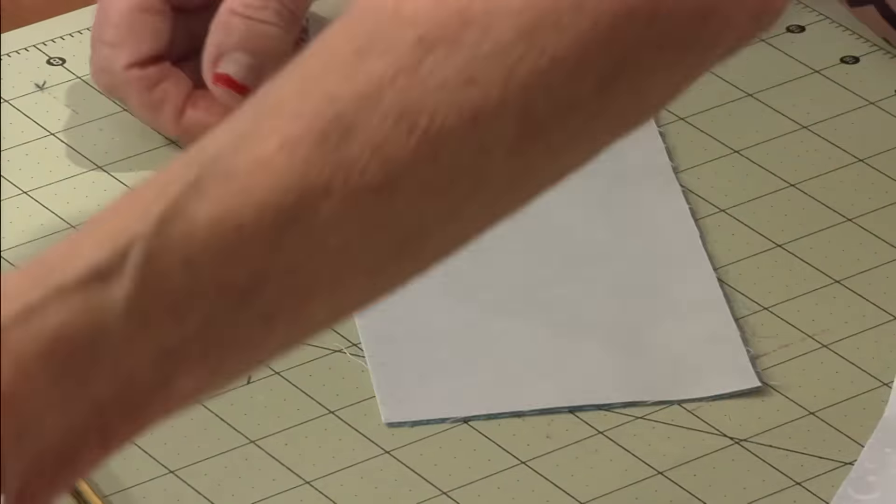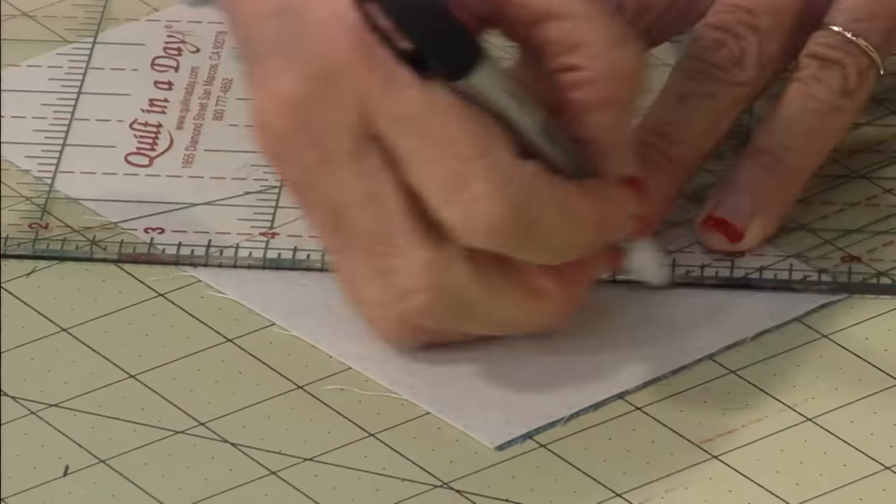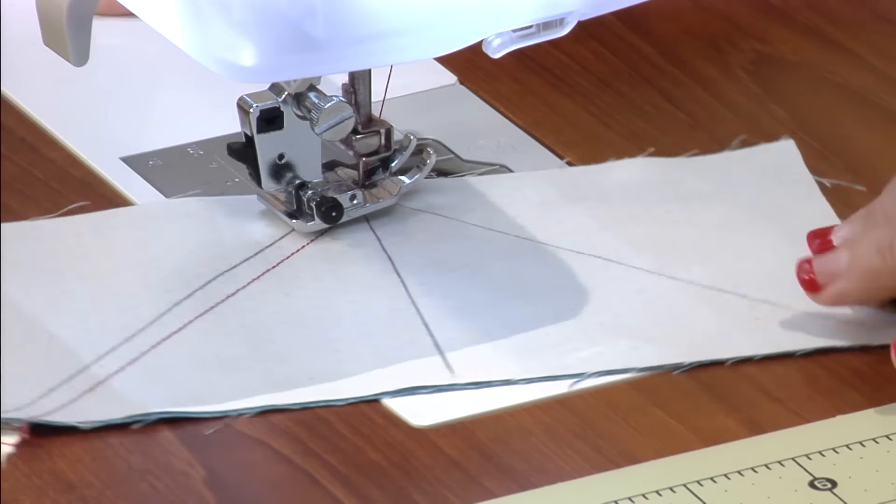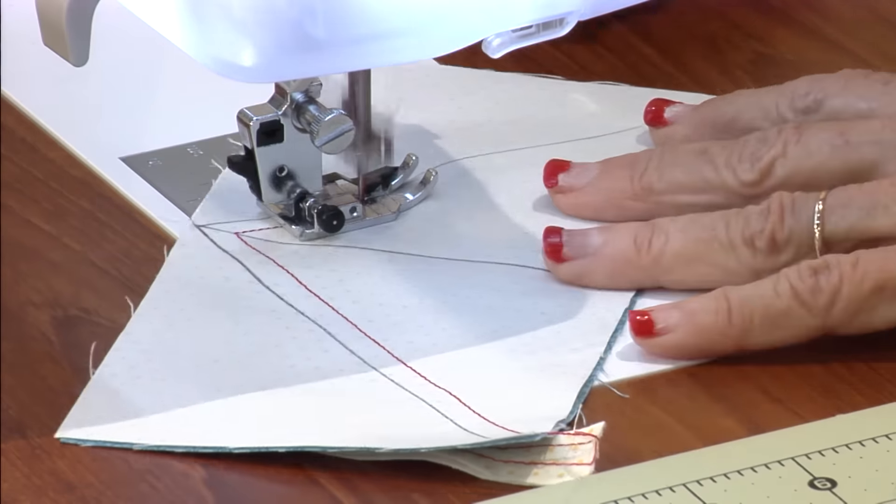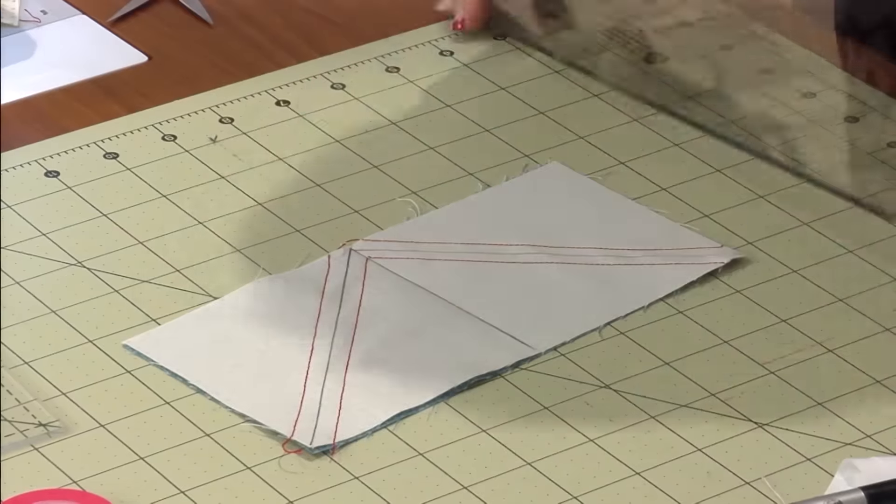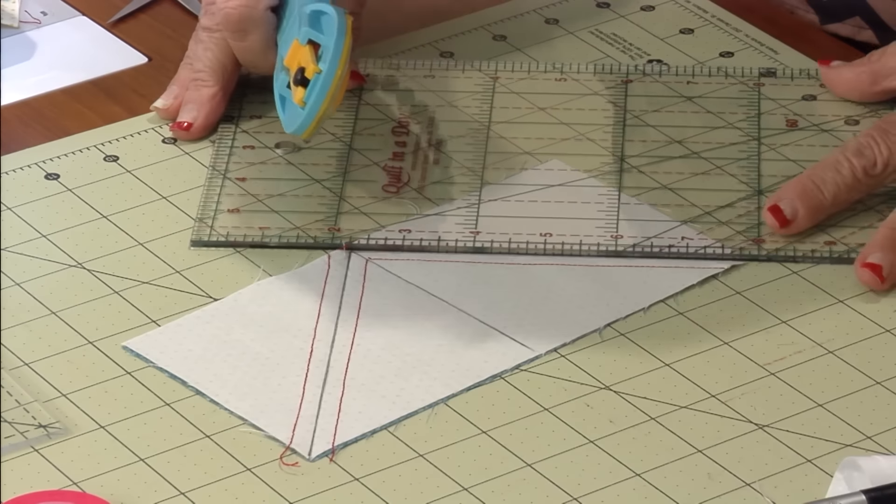Place two fabrics right sides together. Draw a line down the middle and two diagonal lines. Sew a quarter of an inch from both sides of the diagonal line and then cut them into four different pieces.